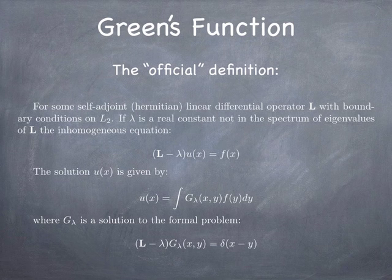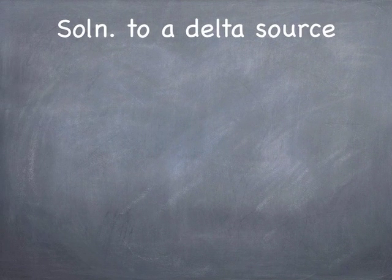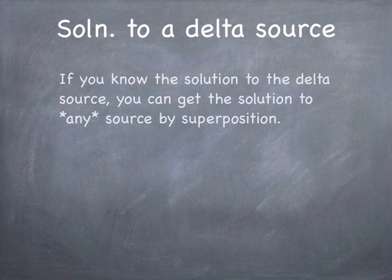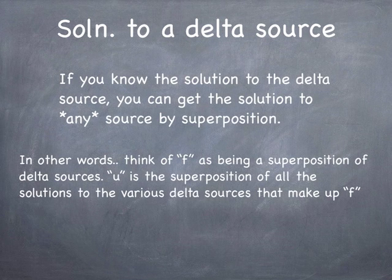We already do this in the context of electrostatic fields and the resulting potential from point charges. A point charge is basically a delta source of charge, and once you know the solution to a point charge, you can calculate the potential for any distribution of charges by adding them up. The solution of the Schrödinger equation for a point wave source is different than the static field of a point charge, but it's the same idea.